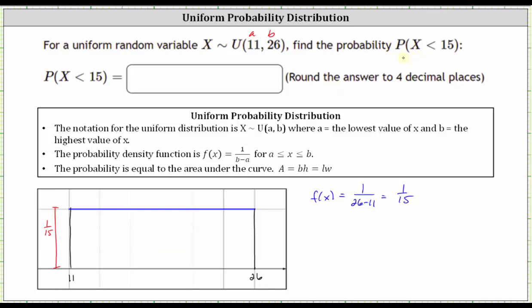Now to find the probability that X is less than 15, let's say 15 is here. Therefore, the probability that X is less than 15 is equal to the area under the probability density function from 11 to 15, or to the left of 15, which is this area here.